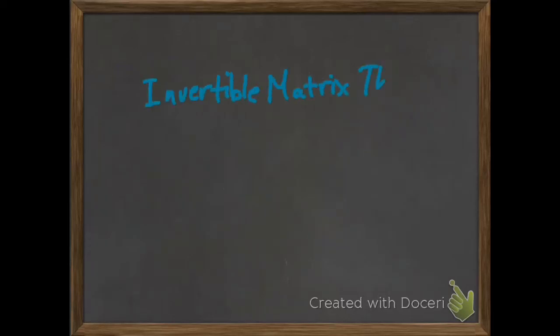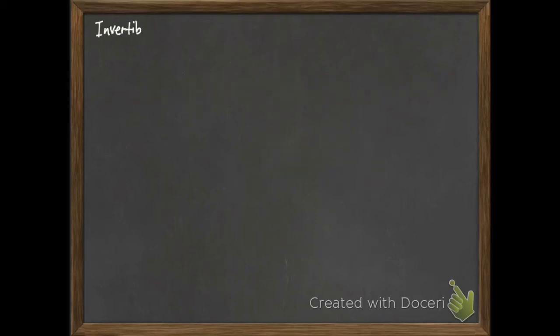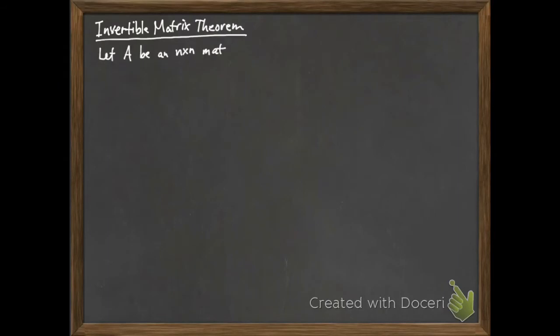Let's talk about the Invertible Matrix Theorem, IMT for short. This is a statement that gives a characterization of invertible matrices. Suppose I have an n by n matrix; then the following statements are equivalent, meaning they're all true or all false.